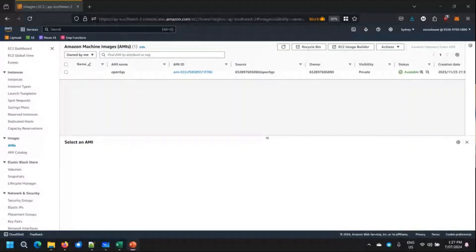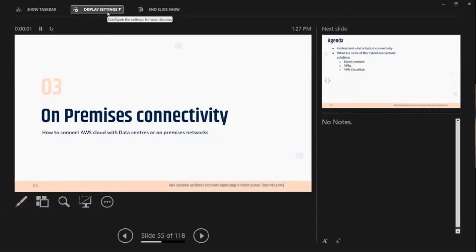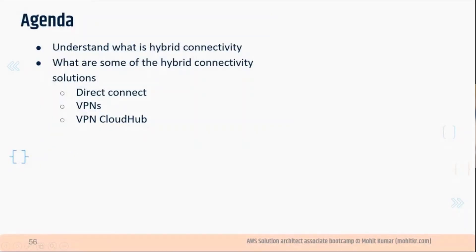We have already covered IP addressing, so I will go to the slide on on-premises connectivity. In this section we are going to cover hybrid connectivity. Hybrid cloud is basically when you connect your private cloud to a public cloud. A private cloud has special software to manage your data center centrally — for example VMware and OpenStack — whereas if you have a distributed setup with different applications running on different server racks, that's an on-premises network.